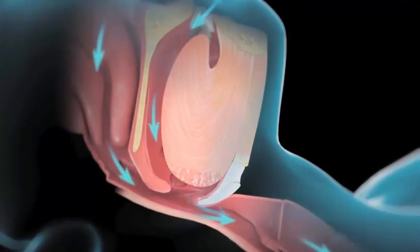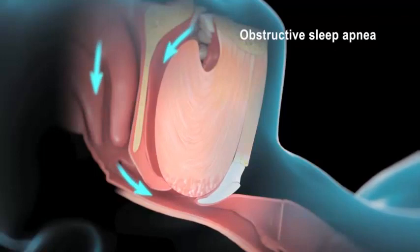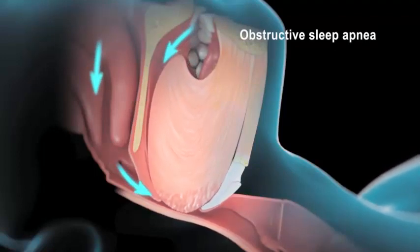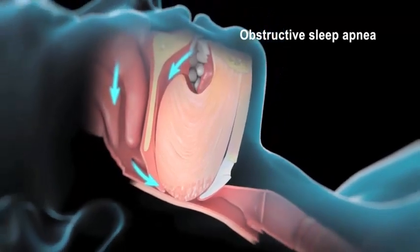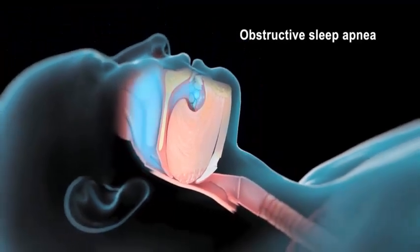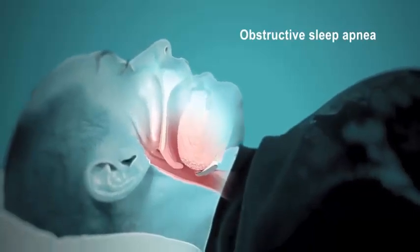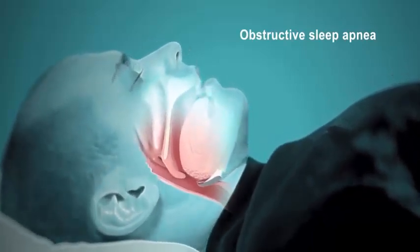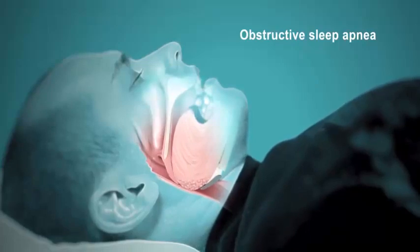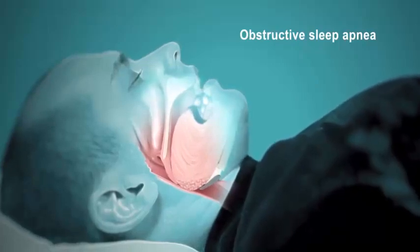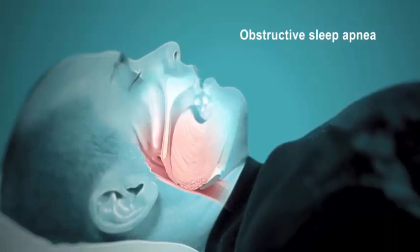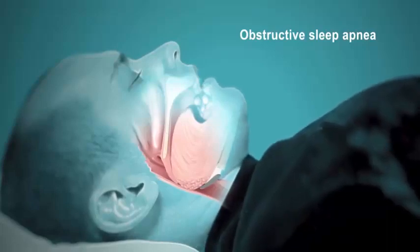If you have obstructive sleep apnea, the muscles of your mouth and pharynx may relax too much. Your tongue drops onto the soft tissue in the roof of your mouth, pressing it against the back of your throat. This completely blocks the flow of air into your lungs. The lack of oxygen in your lungs wakes you up. You may gasp for air to re-establish airflow before falling asleep again. The cycle of apnea and waking up may happen many times at night, preventing restful sleep.